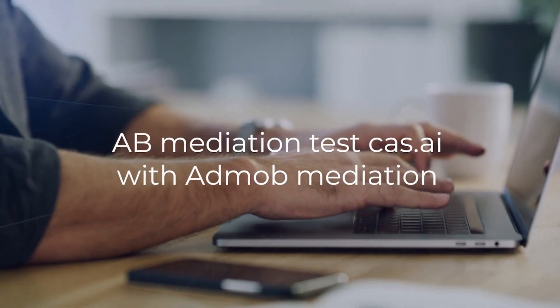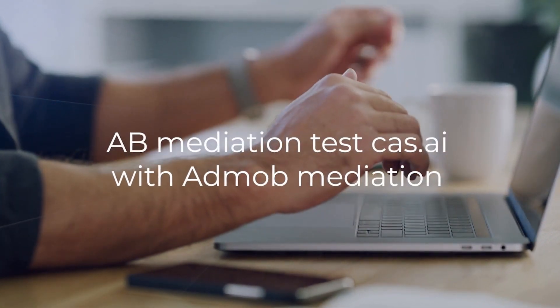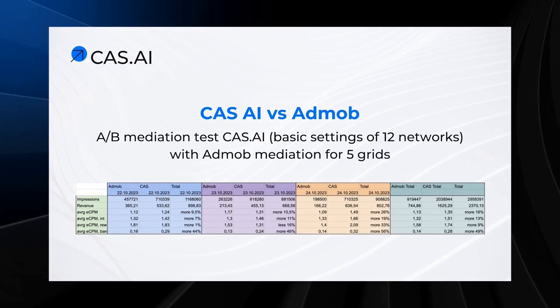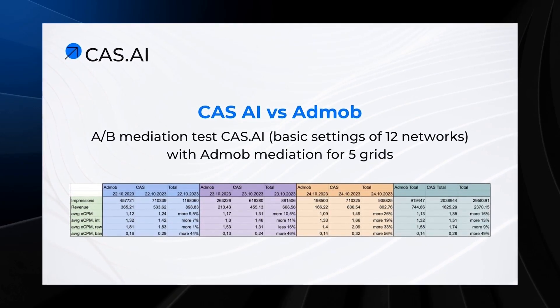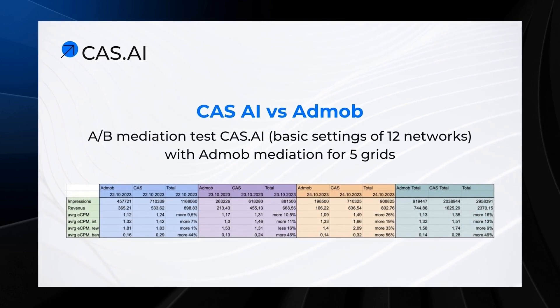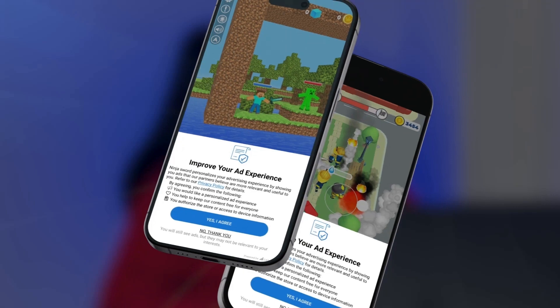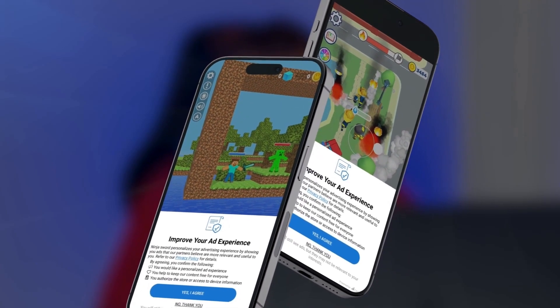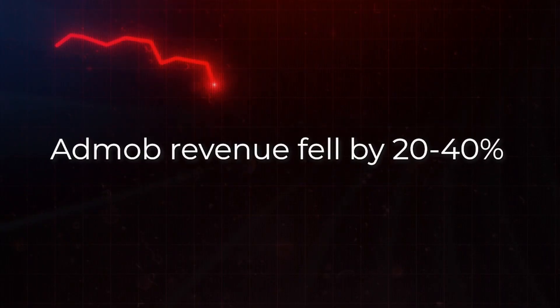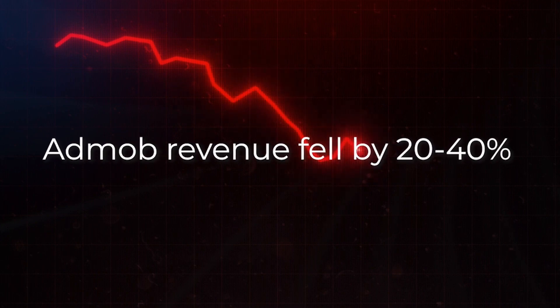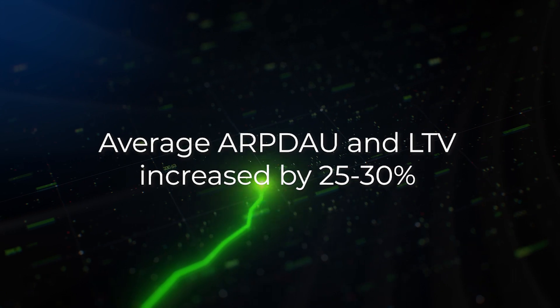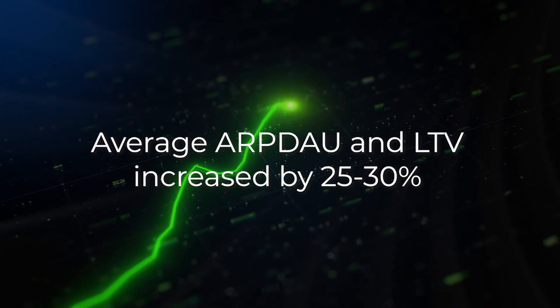There is a specific case. In October 2023, a developer from Ukraine conducted A/B tests of our mediation and AdMob mediation with five enabled networks. It is crucial to note that the CMP Dialogue was already included in that month of October. His income from AdMob obviously decreased by 20–40%, but this was more than offset by the overall increase in income from other networks, and the average ROAS and LTV increased by 25–30%, including within the European Union.